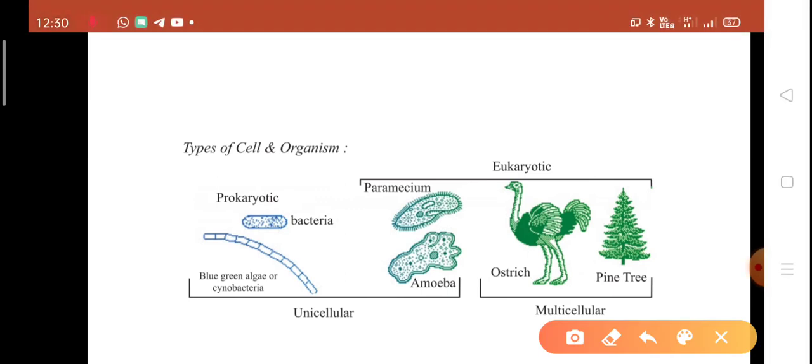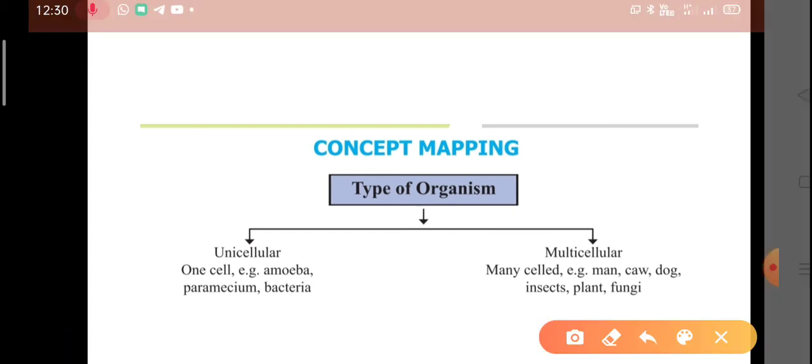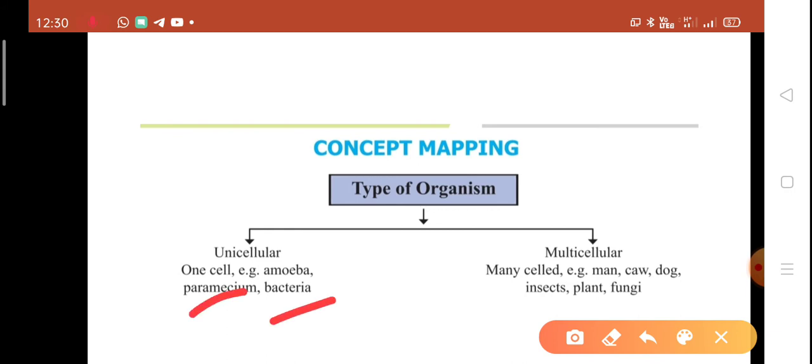A single cell called amoeba performs all functions such as capturing the food, digesting the food, respiration, and excretion. We can divide organisms into unicellular and multicellular. Unicellular means one cell, for example amoeba, paramecium, and bacteria. Multicellular means many cells, from one to billions, for example man, cow, and dog. On the basis of number of cells, we can divide organisms into two parts: multicellular and unicellular.